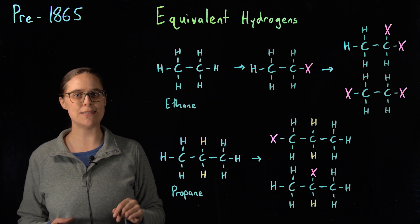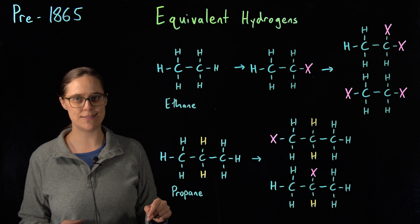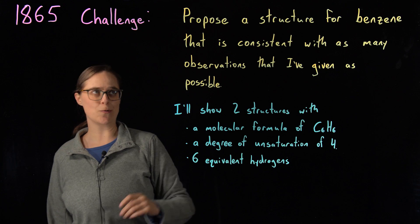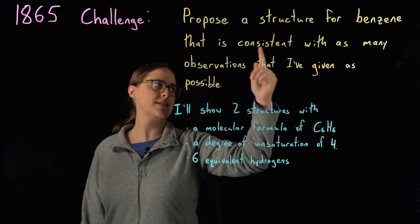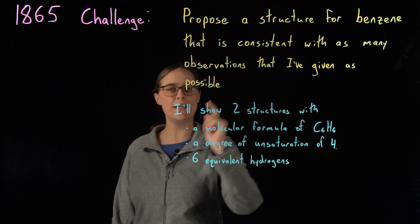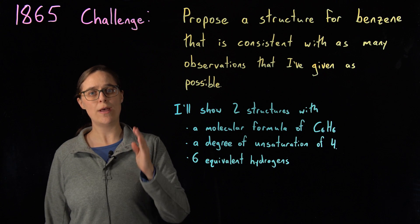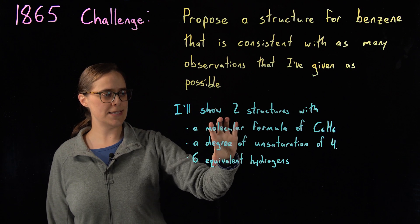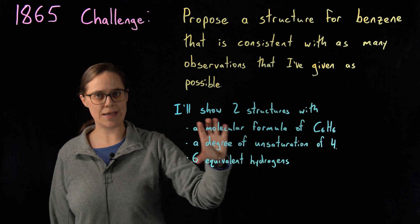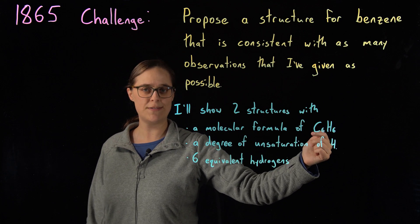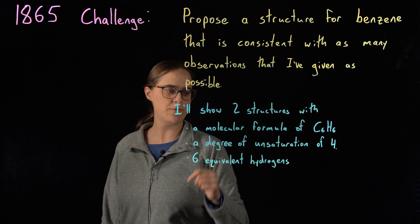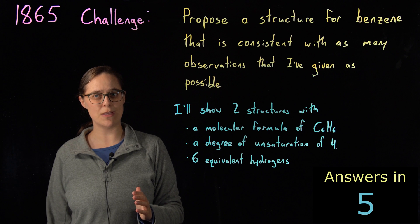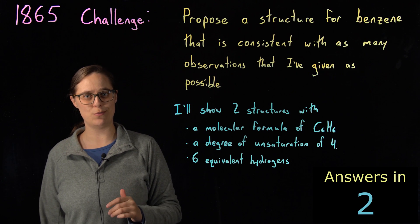The year is now 1865 and here is the challenge: propose a structure for benzene consistent with as many of these observations as possible. The observations we need to satisfy are a molecular formula of C6H6, a degree of unsaturation of 4, and 6 equivalent hydrogens. Pause the video now if you want time to think, because I'm about to show two structures that were proposed around this point in time.